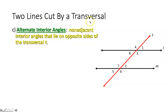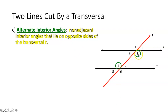Alternate interior angles are non-adjacent interior angles that lie on opposite sides of transversal T. They can't be right next to each other like 8 and 3; they're inside lines L and M, and on opposite sides of the transversal. Two alternate interior angles would be angles 3 and 7 — not adjacent, on opposite sides of the transversal, and inside the two lines. Same with angles 8 and 2.